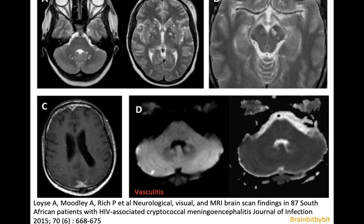Because of the perivascular involvement, you can also get a vasculitis-like pattern with small infarctions, as you can see here on these diffusion weighted and ADC images, in the right cerebellar hemisphere.